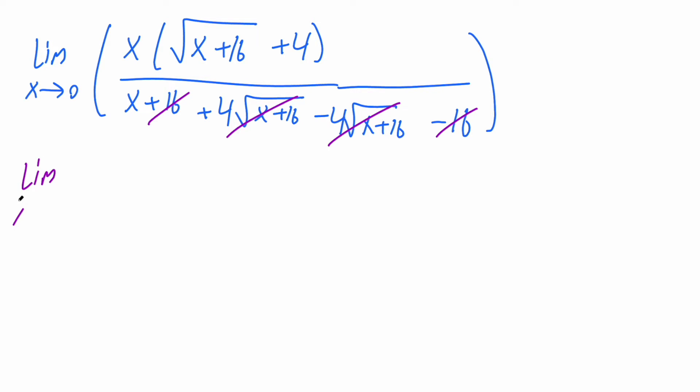We have the limit as x approaches 0 of x times (the square root of x plus 16, plus 4) divided by x. Now the x's can cancel.